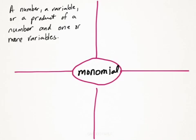So what is a monomial? It's just going to be a number, a variable, or a product of a number and one or more variables. So here are three separate examples of a monomial: the number one, the variable x, and the variable x squared. Those are all monomials.